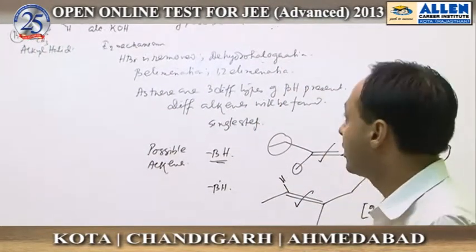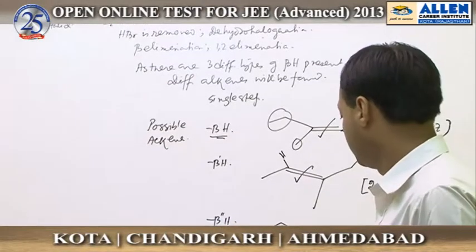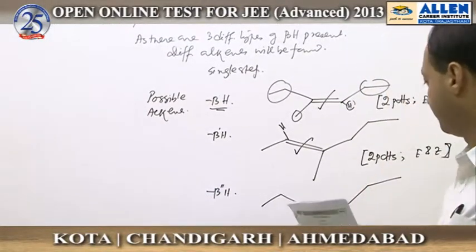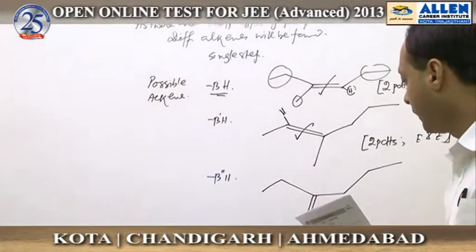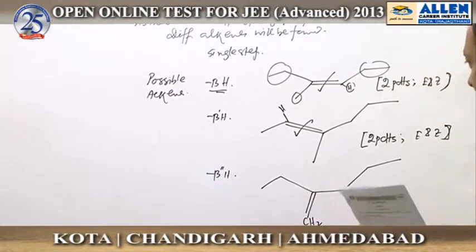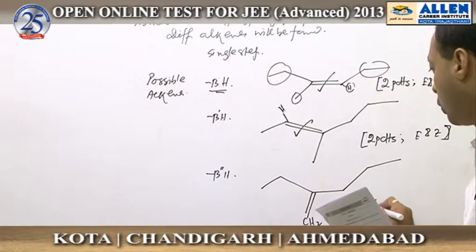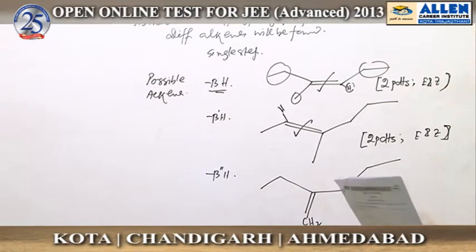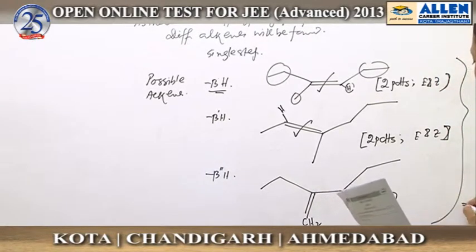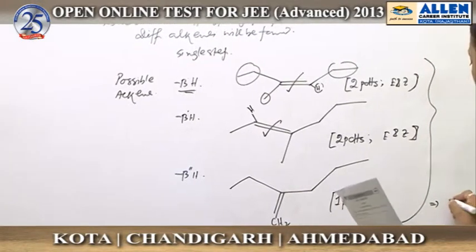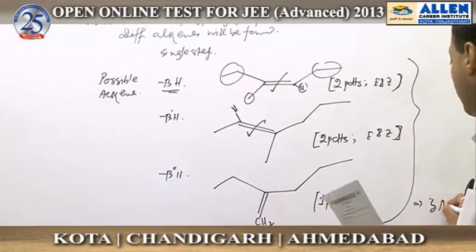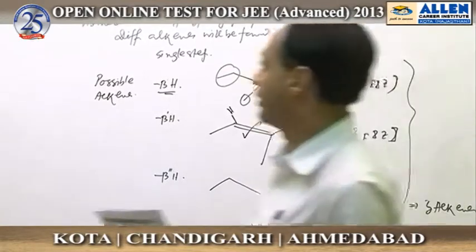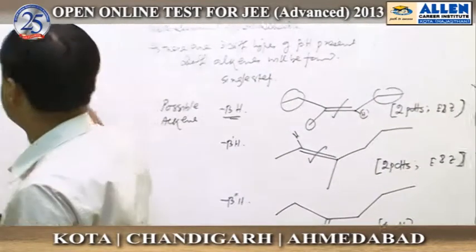The third type of beta-hydrogen removal gives an alkene where the double bond does not show geometrical isomerism, so only one product is possible there. Therefore, total alkenes possible: 2 + 2 + 1 = 5 alkenes. The answer is 5.